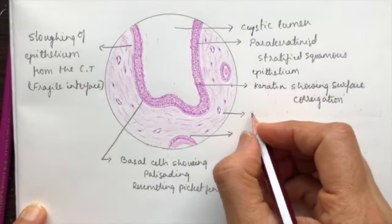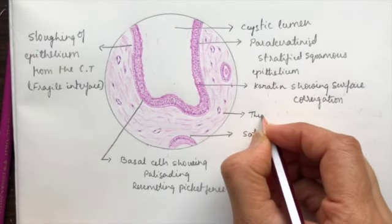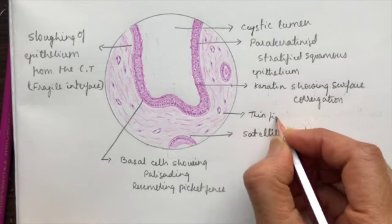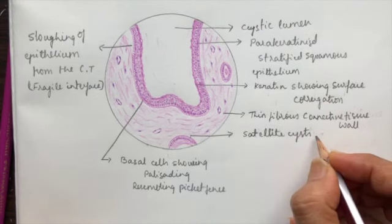Last but not the least, we should label the thin fibrous connective tissue wall in which we see the satellite cysts, also called as daughter cysts.